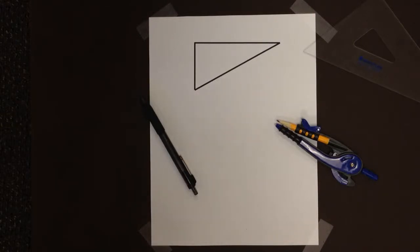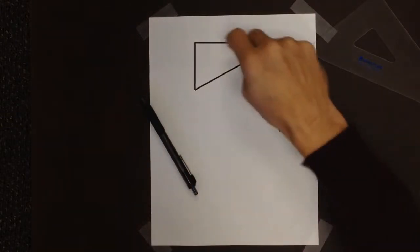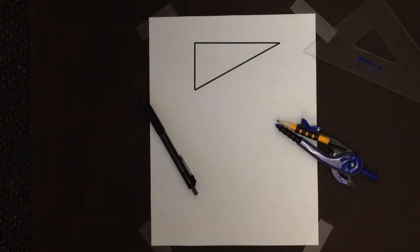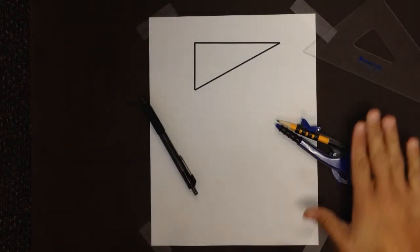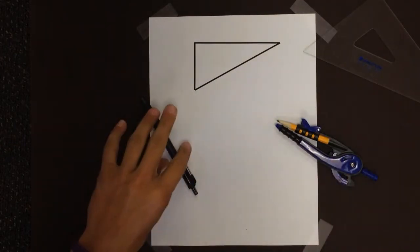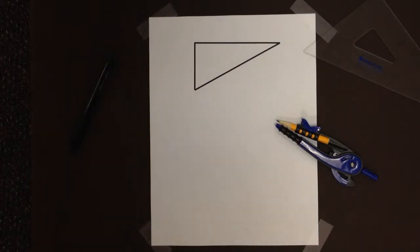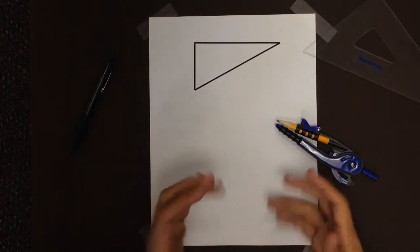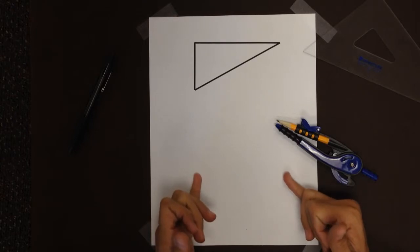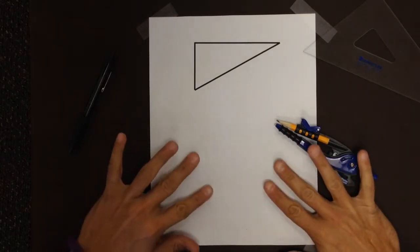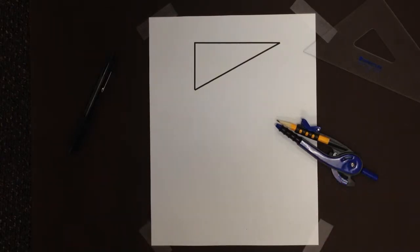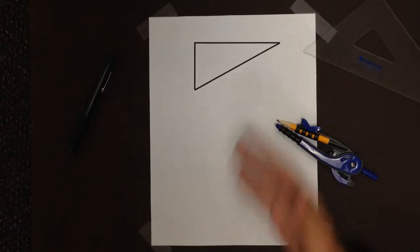Hello. Today we're going to construct a triangle that is congruent to that one, and we're going to use angle-side-angle congruence. Now what that means is I need an included side and two angles on either side of it. But at the moment I have nothing other than the triangle I want to construct a congruent copy of.